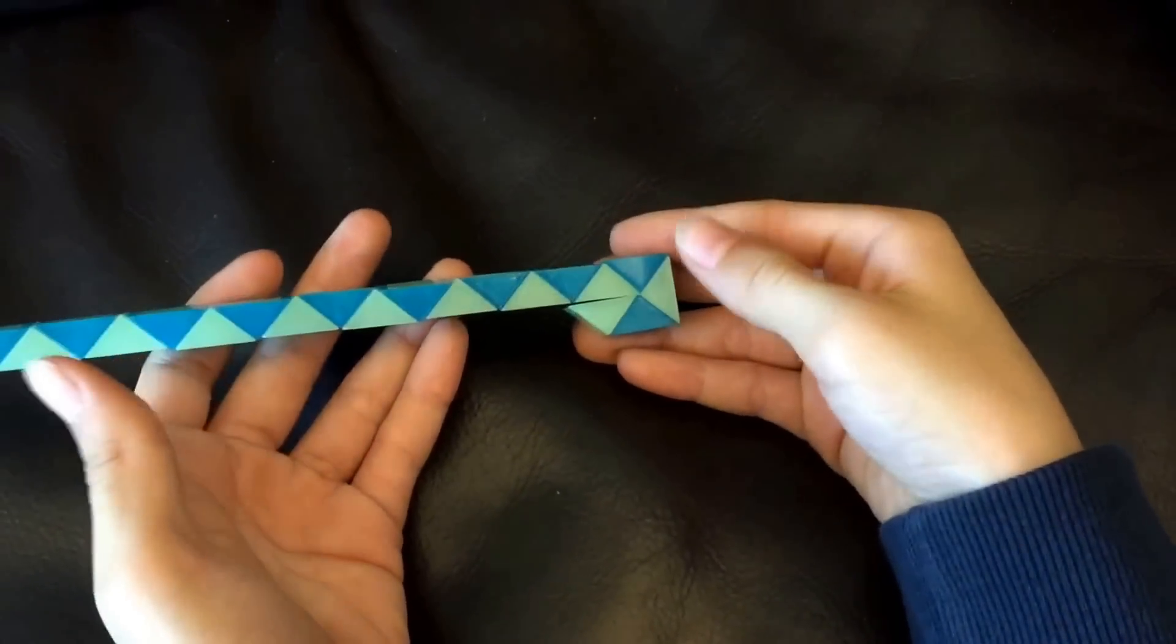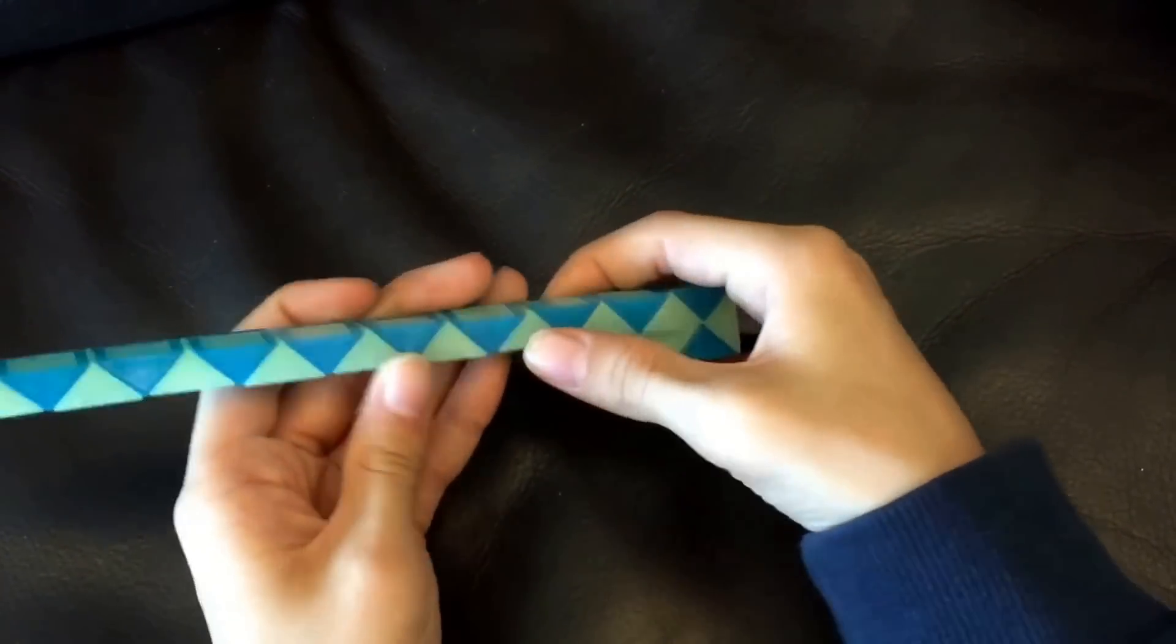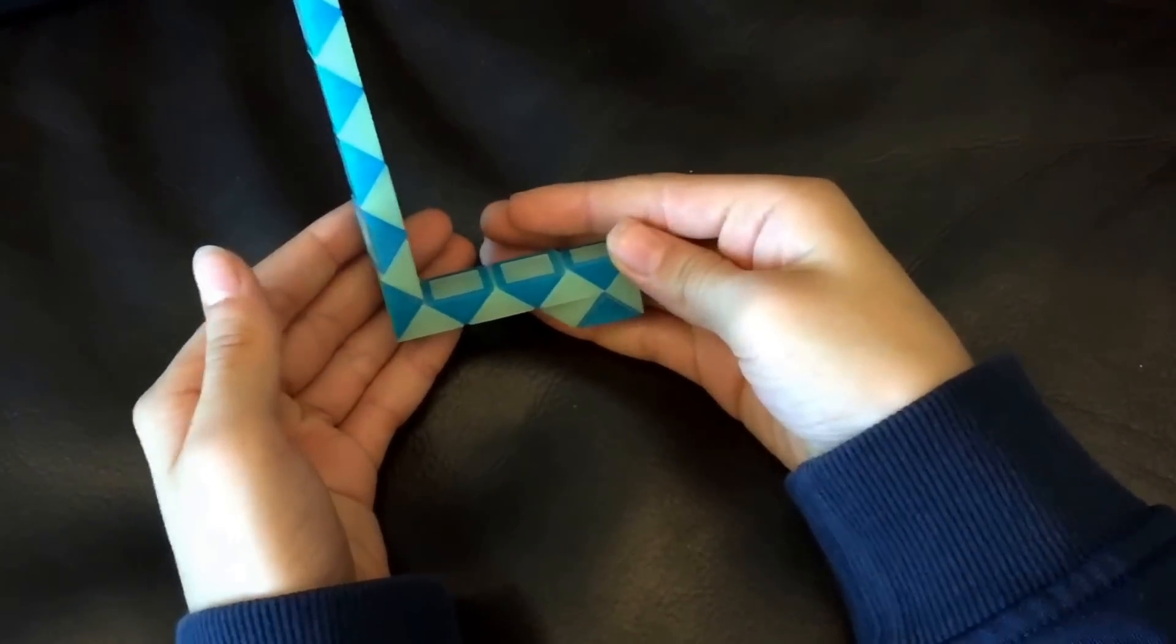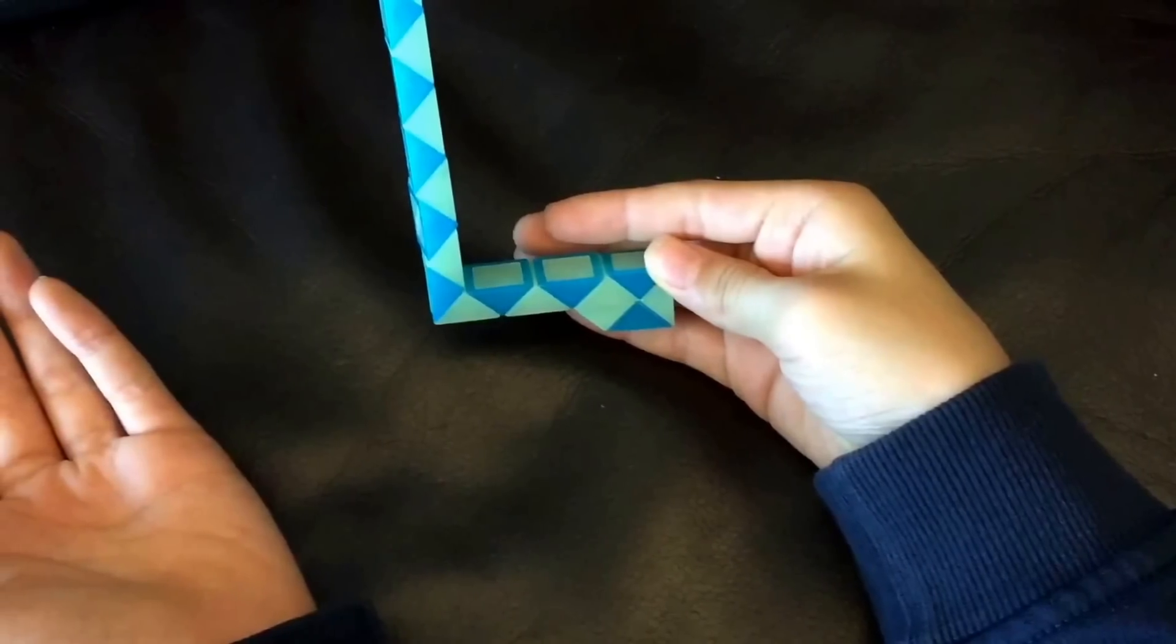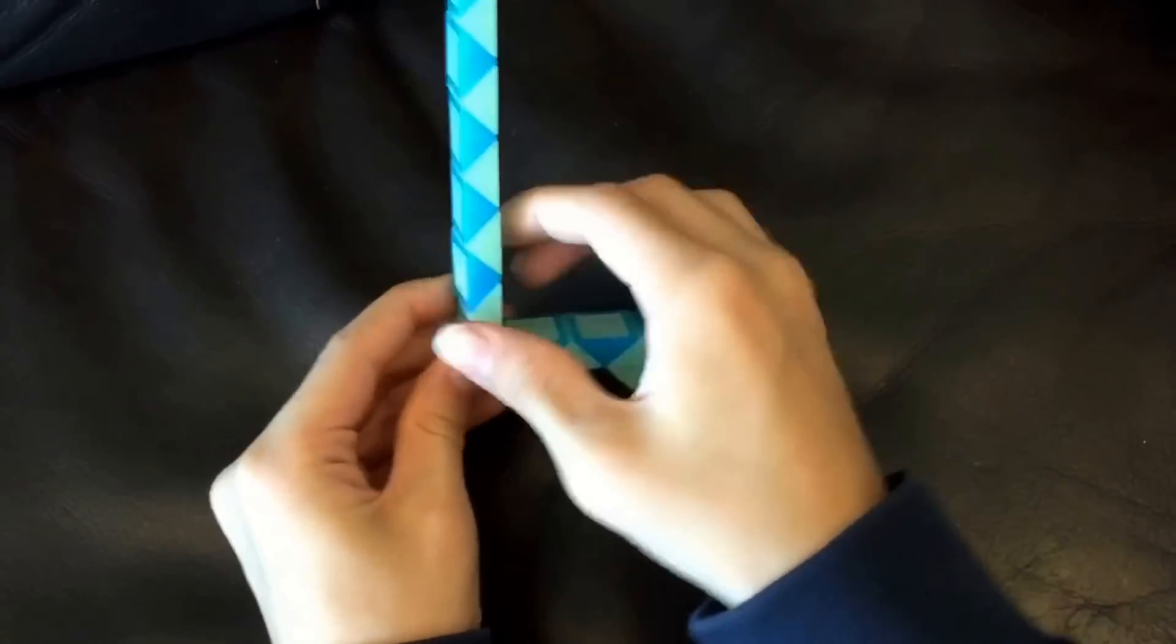And then you're going to count one, two, three, four, five, six, and this blue one is going to go up. And then this white one is going to go right.